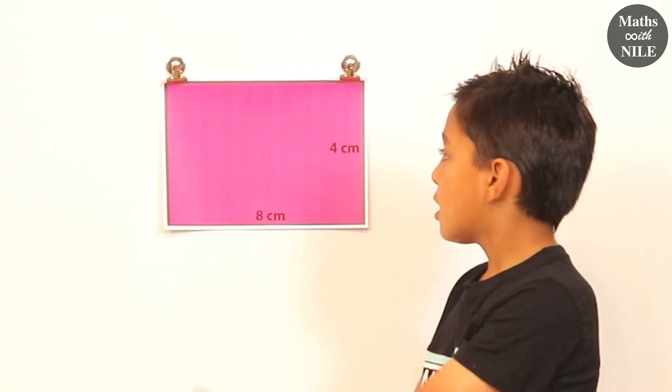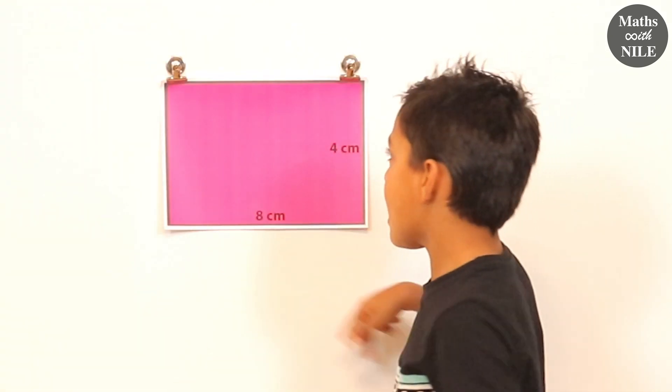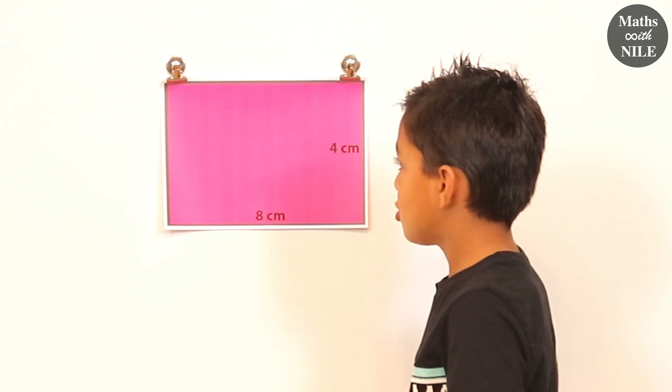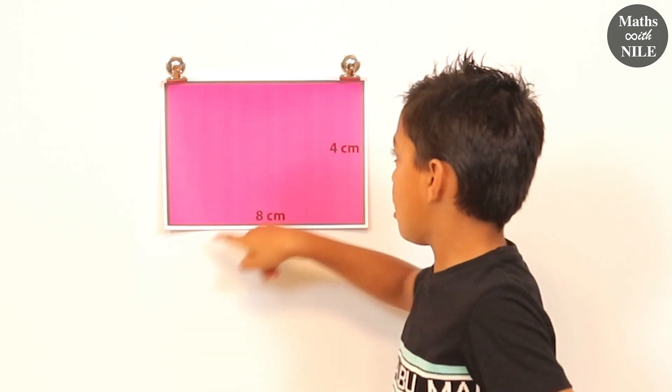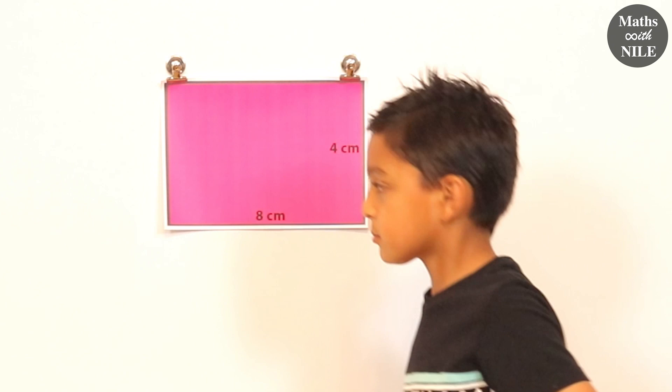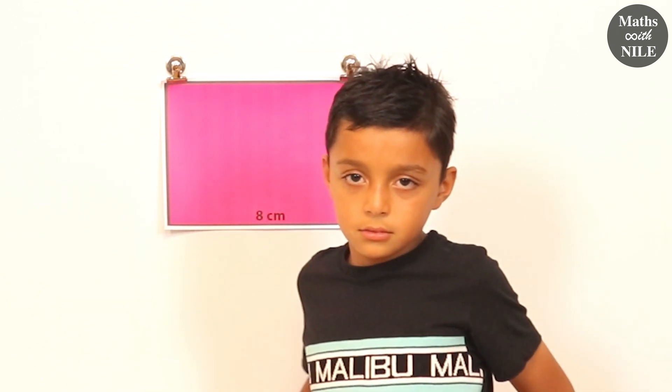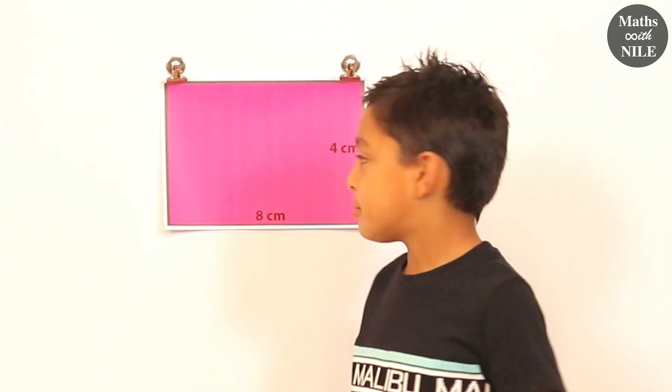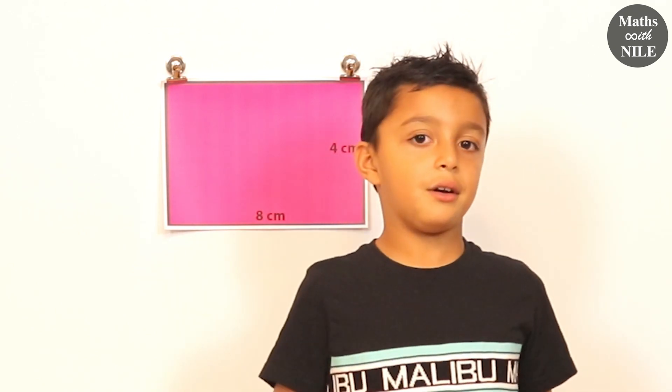What do you have on the board behind you? A rectangle. How do you know it's a rectangle, Niall? Because there are two pairs of equal length sides. Okay, the opposite sides are equal. That makes how many sides in all? That makes four sides.